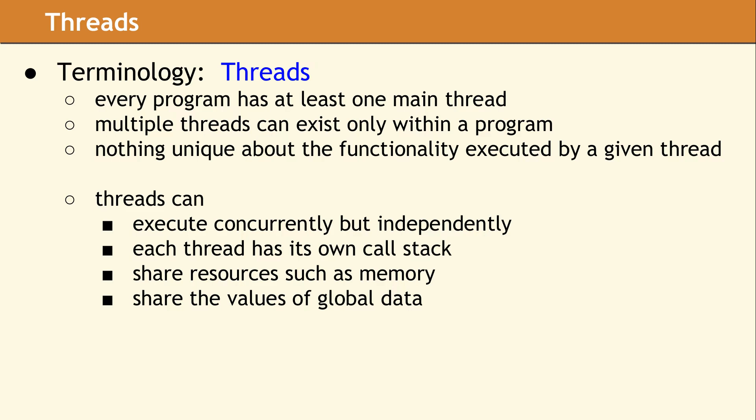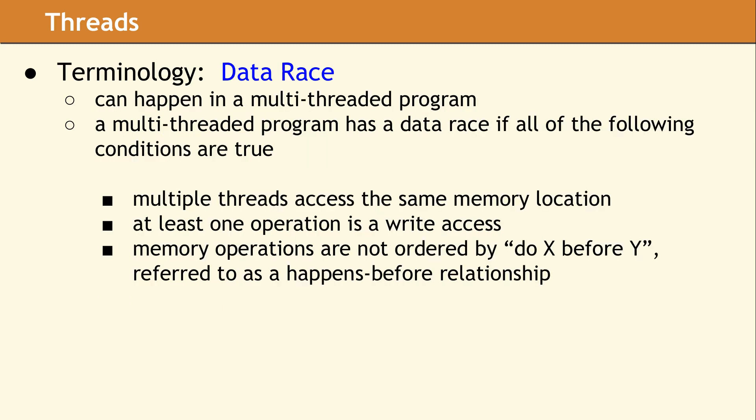Every program has at least one main thread, so even if you have never written a multi-threaded program, your code is always running in a thread. A multi-threaded program is one which has more than just the one main thread. There is nothing special about the code in a thread; however, each thread has its own call stack. The main concerns in a multi-threaded program are dealing with shared resources, like data stored on the heap.